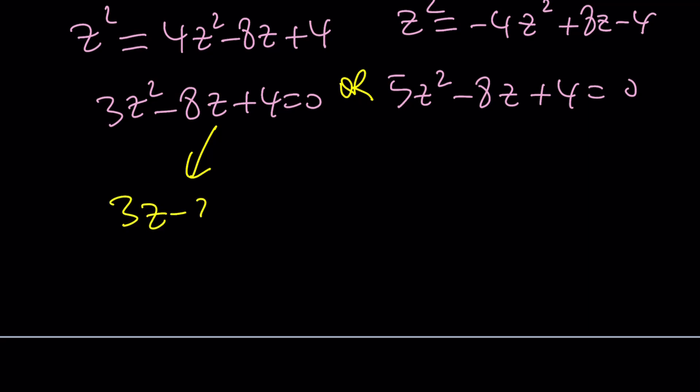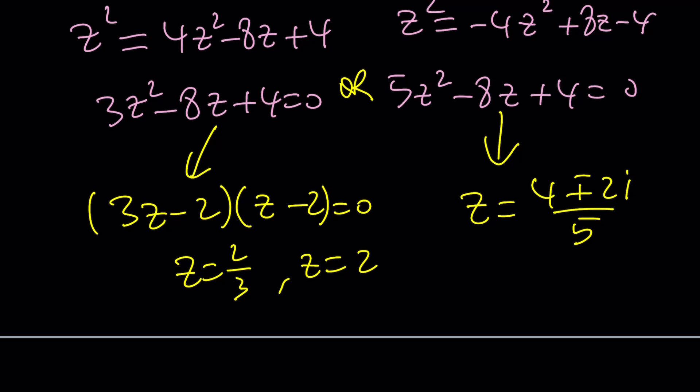But if you go ahead and use the formula, or otherwise just factor it with the X method or Z method, you get 3Z minus 2 multiply by Z minus 2 equals 0. And from the second equation, it's not factorable. You get the complex non-real solutions. And again, as before, we get the same thing, 2 thirds and 2, and these two complex solutions. That brings us to the end of the third method and the beginning of the fourth method, which we'll briefly talk about.